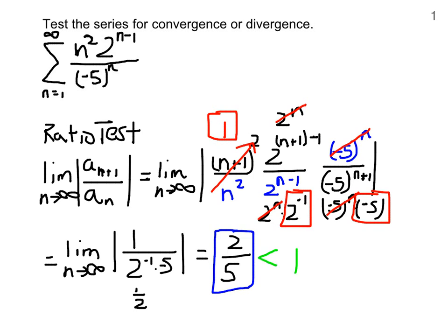The conclusion of the ratio test is that when you find this limit L and it's less than 1 and positive, then the series will converge. Therefore, this series converges by the ratio test.